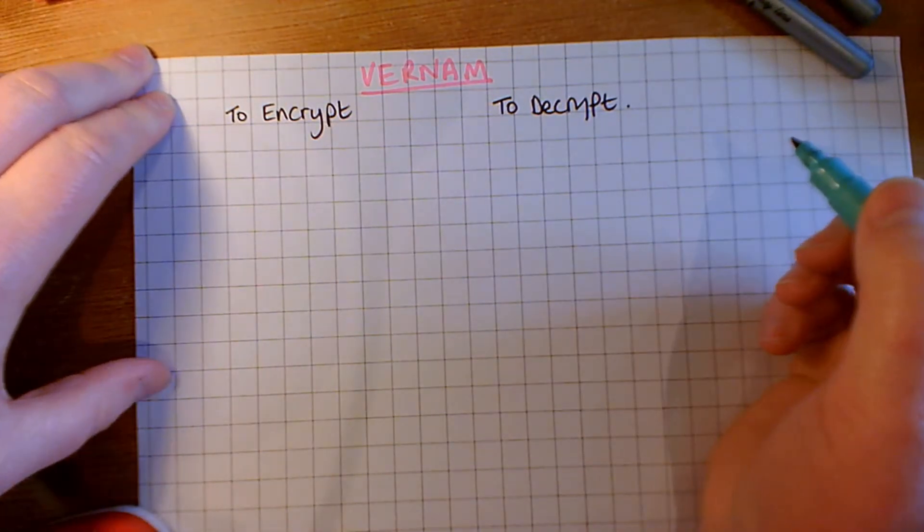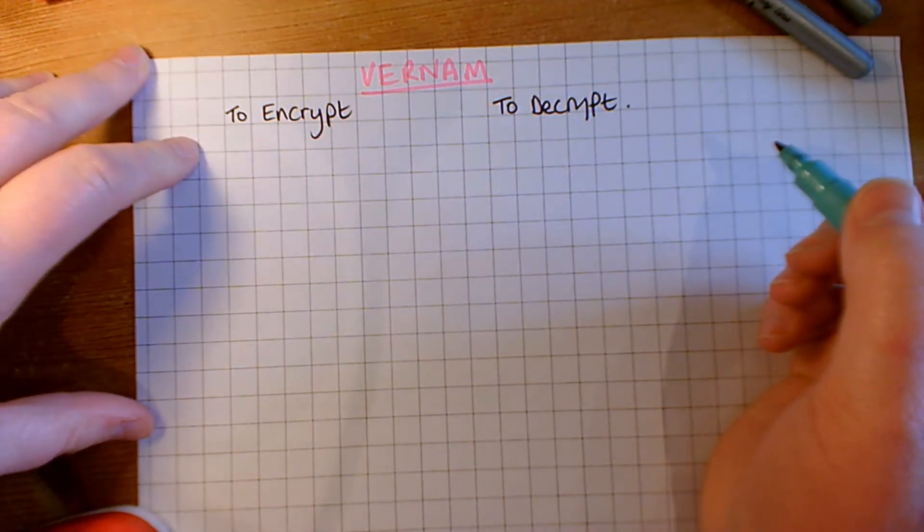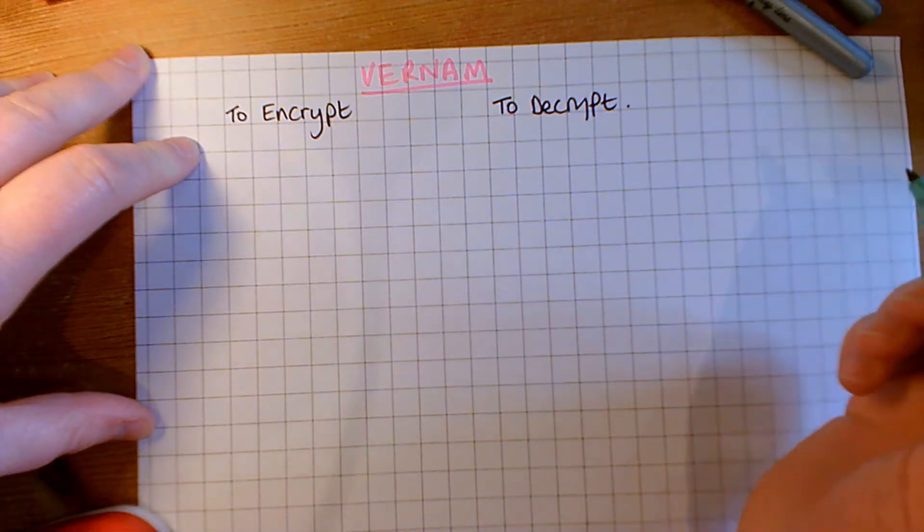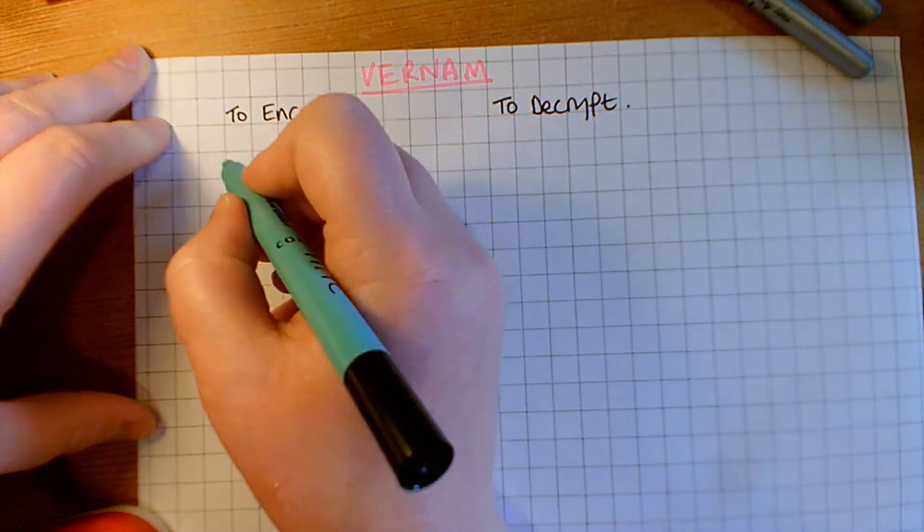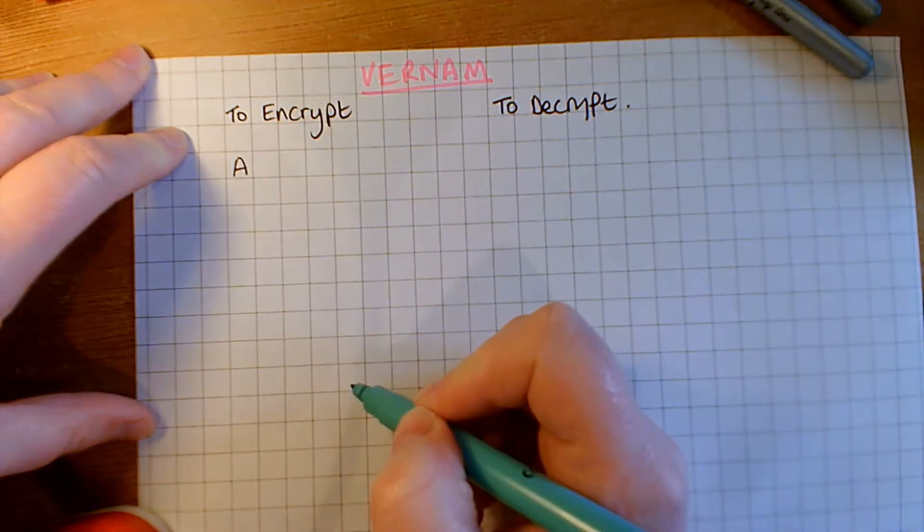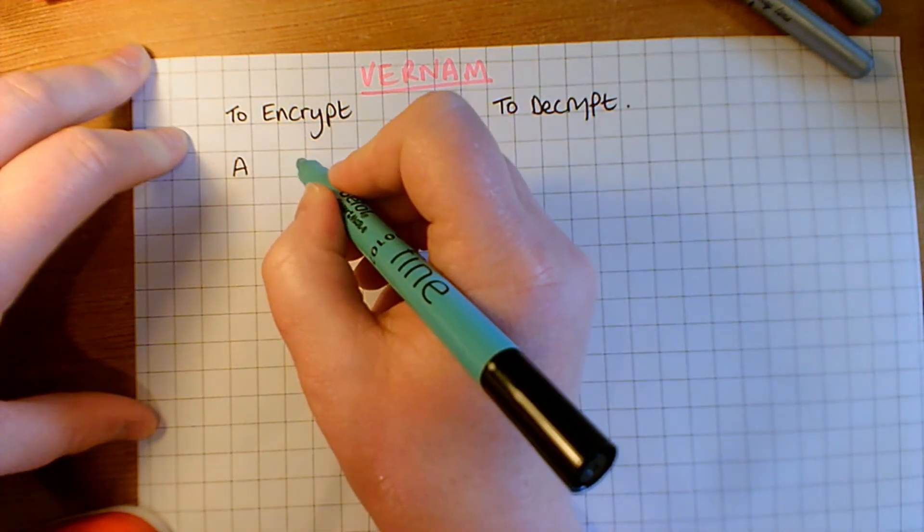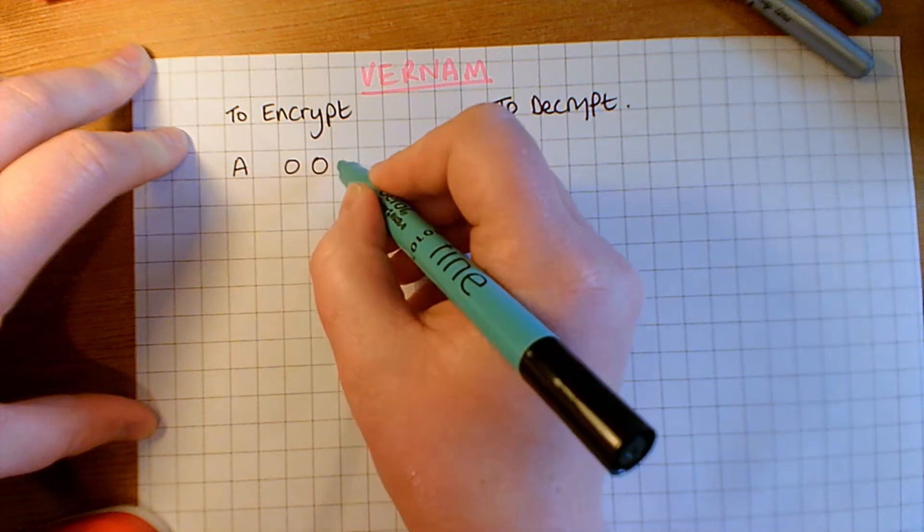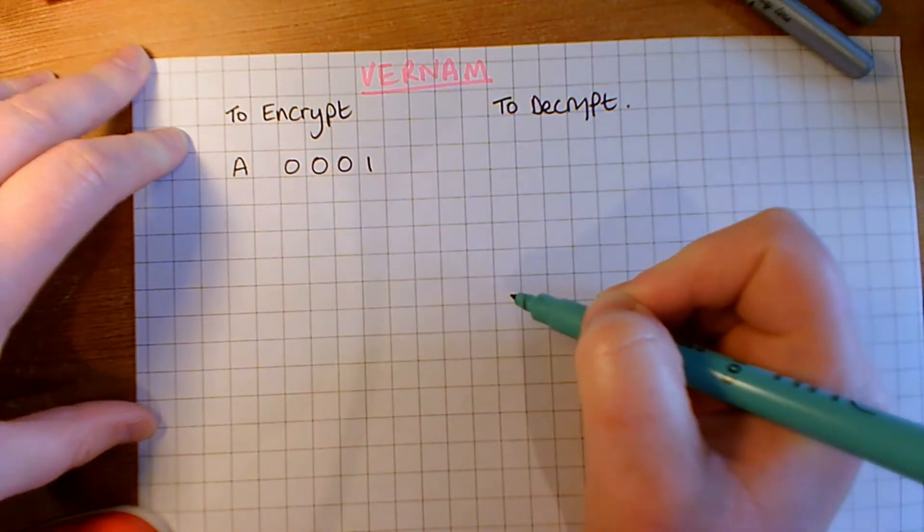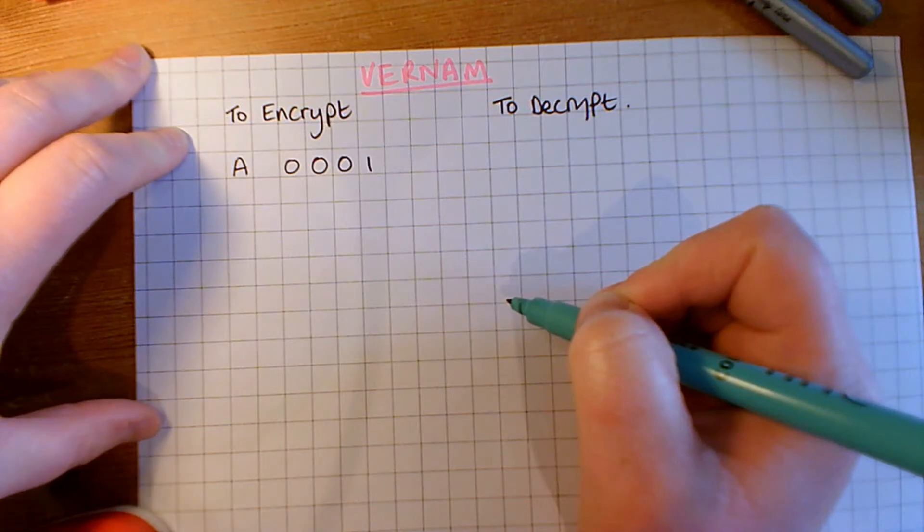Okay, so we're just going to do one example using just one letter, so I'm going to start off with the letter A, so we're going to encrypt the letter A. And so first off, we need the binary value for that, so there we go. So, I'm going to use four bits rather than the full eight just to save time, but it works in exactly the same way.